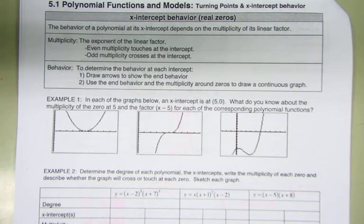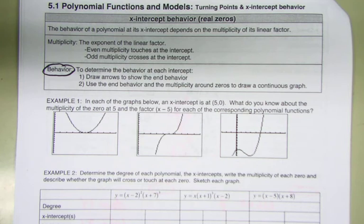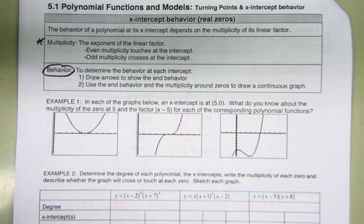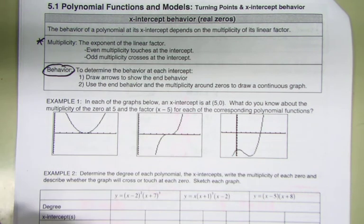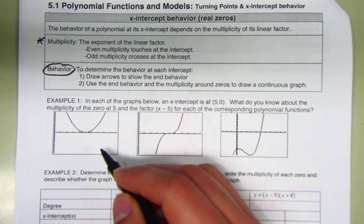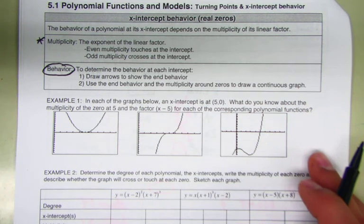We're going to pick up where we left off yesterday. We've already talked about behavior — how it's going to look when we start or end the graph — but now we're going to touch on multiplicity. Together, these two things will help us create a picture of what's going on with the graph, not just start and end, but what's going on in the middle.